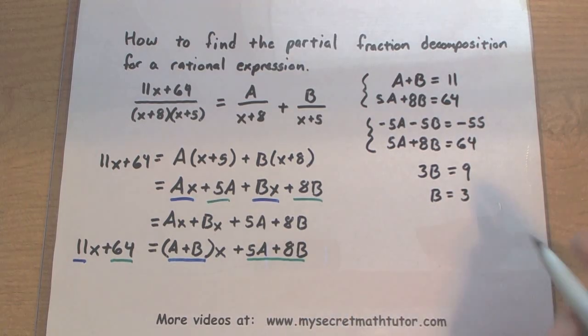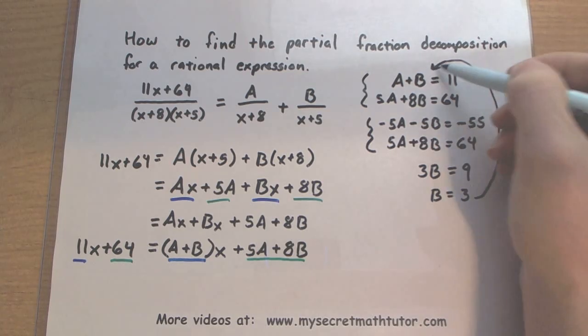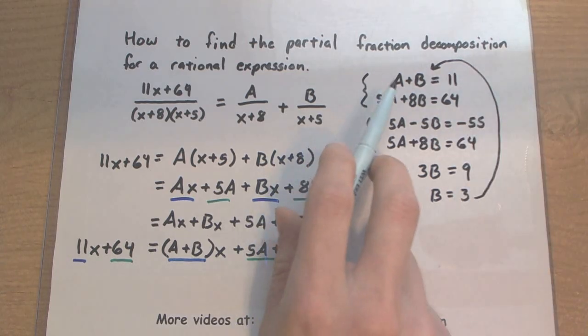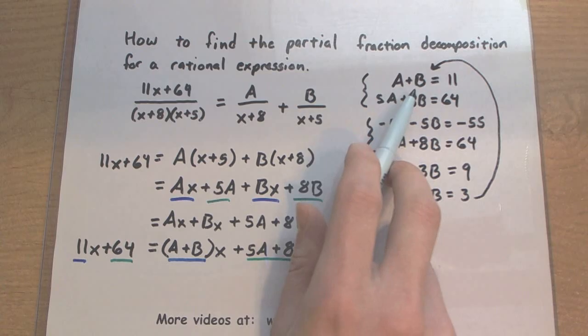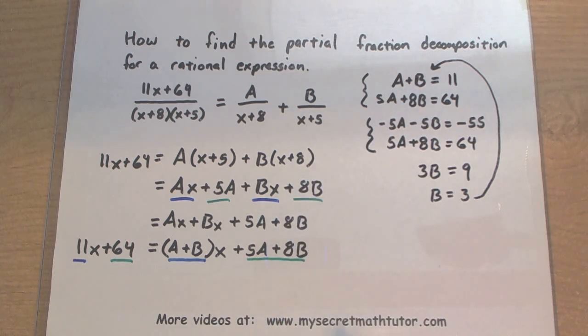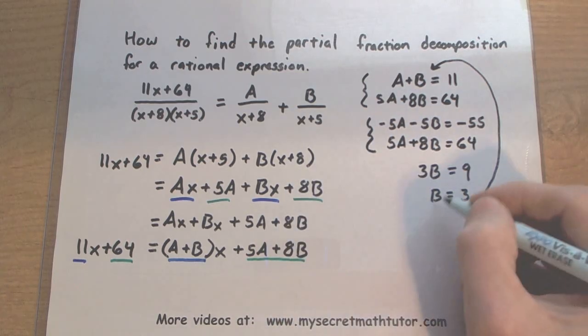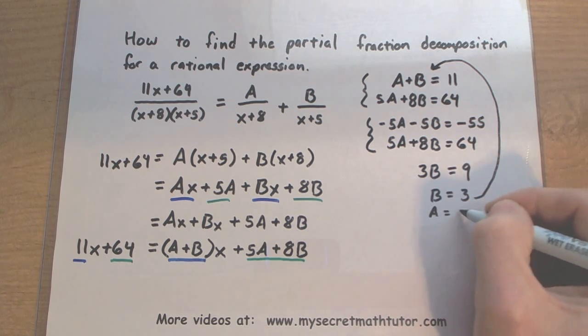Now once we know what B is, you could substitute that in. A plus 3 equals 11. Well, that means the only thing that A can be is 8.